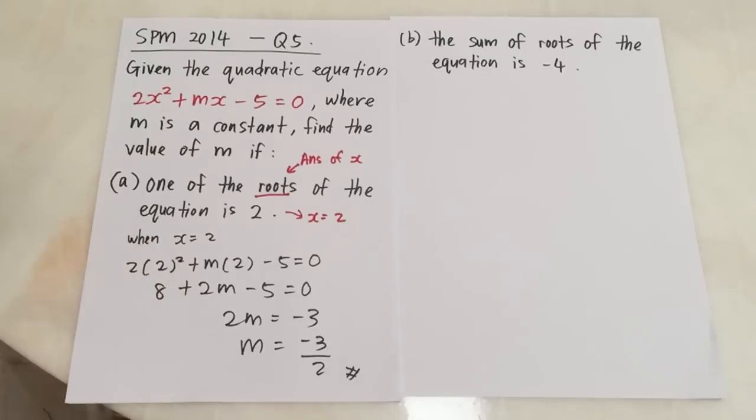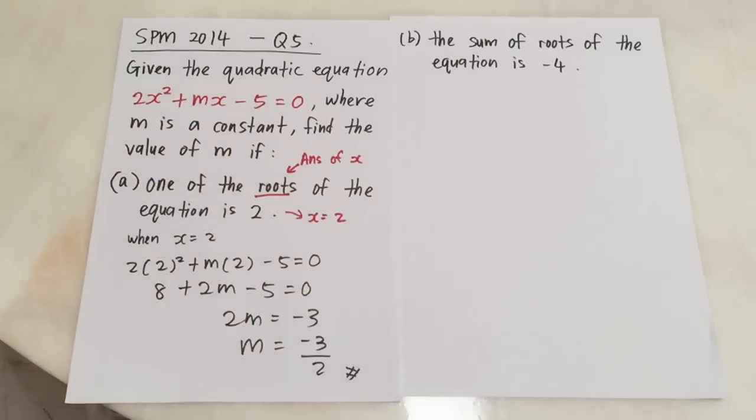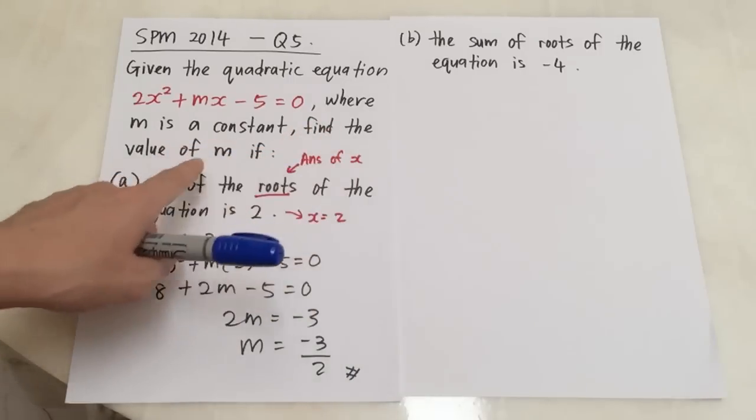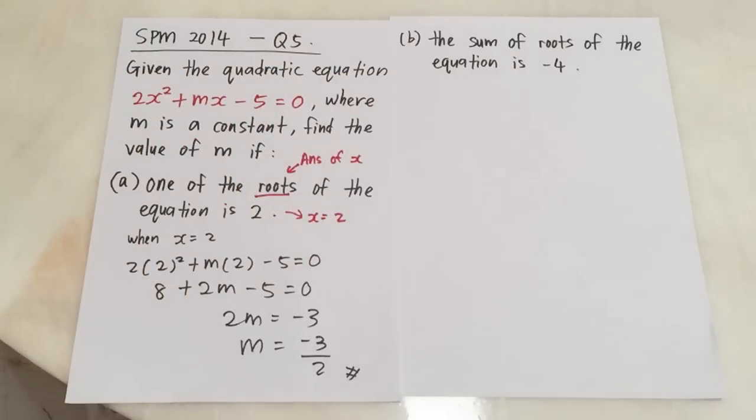Alright, this is how we find m easily. You just need to understand, yes, one of the root actually is 2 means x equals to 2. Okay, this is part A. And for part B, the question says the sum of the root of the equation is negative 4.